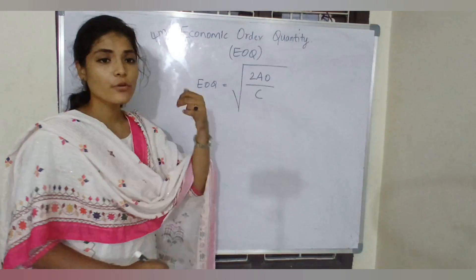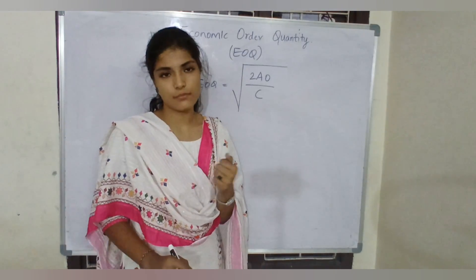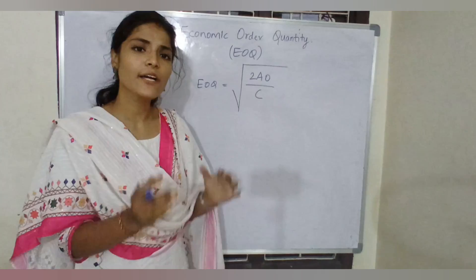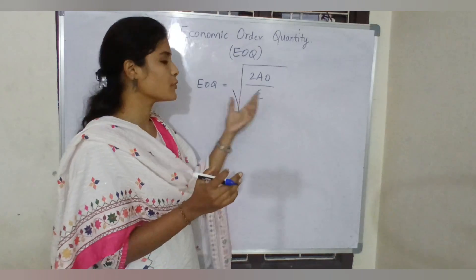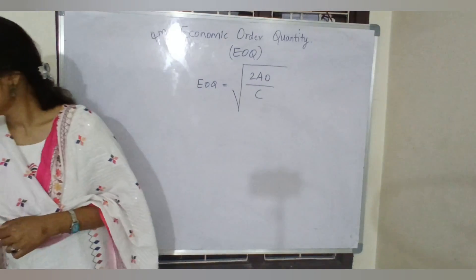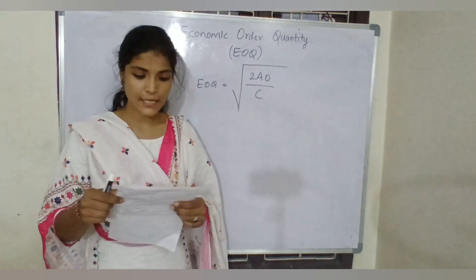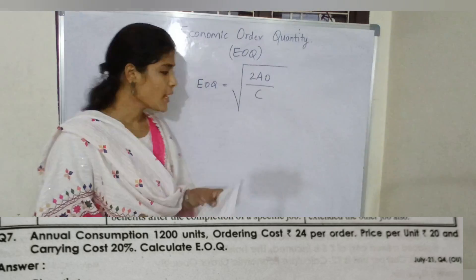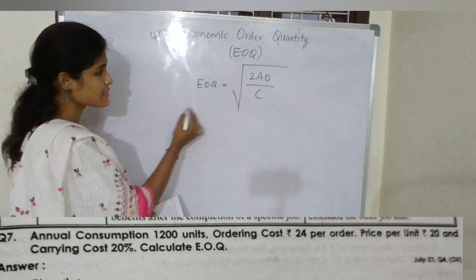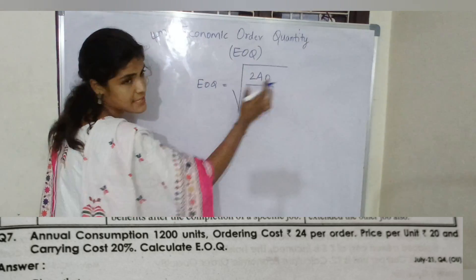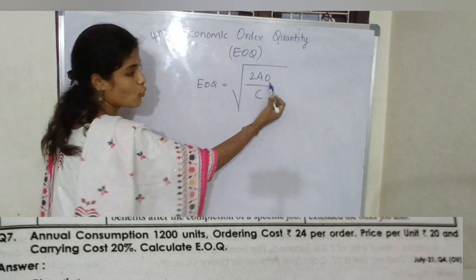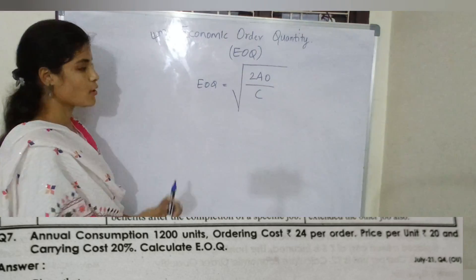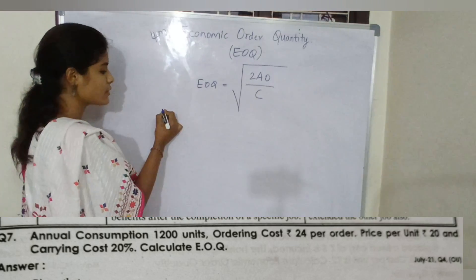Now I'll discuss what data you need to substitute into the formula. In the question, A is nothing but annual consumption, O is nothing but ordering cost, and C is nothing but carrying cost.